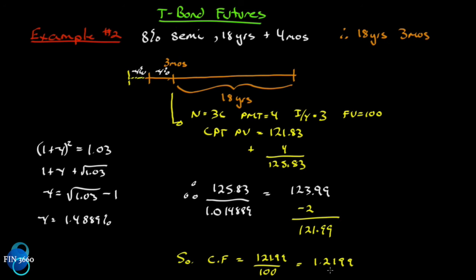We've now seen how to calculate the conversion factor for a bond with an equal number of six-month payments and one that does not have an equal number. For the unequal case, we take the equal six-month payments figure and bring it backwards, making an interest rate adjustment, then drag the price back and pay the other party for their accrued interest.